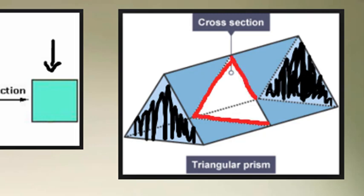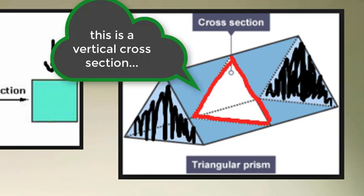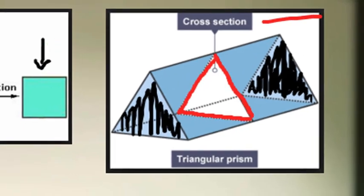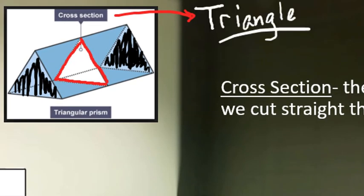Like if you did a nice kung fu chop and sliced through, the shape you get from this is a triangle. So the cross section for the triangular prism, if you did a vertical cross section, this would be a triangle.